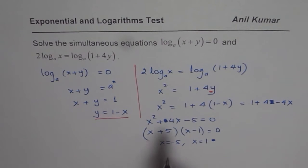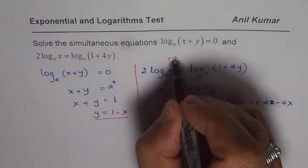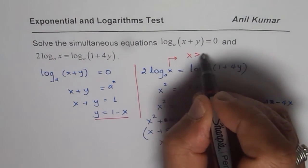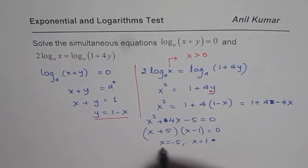Now let us see, can x be minus 5? Well, if you analyze this equation, then we know x is greater than 0, right? So this is not valid.